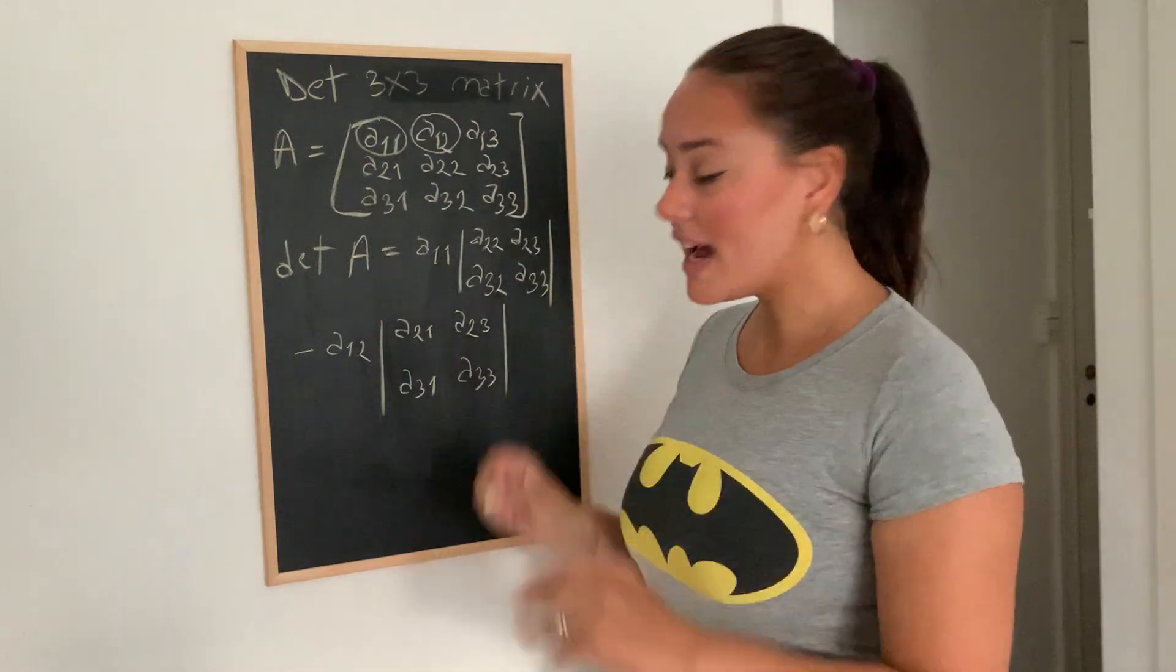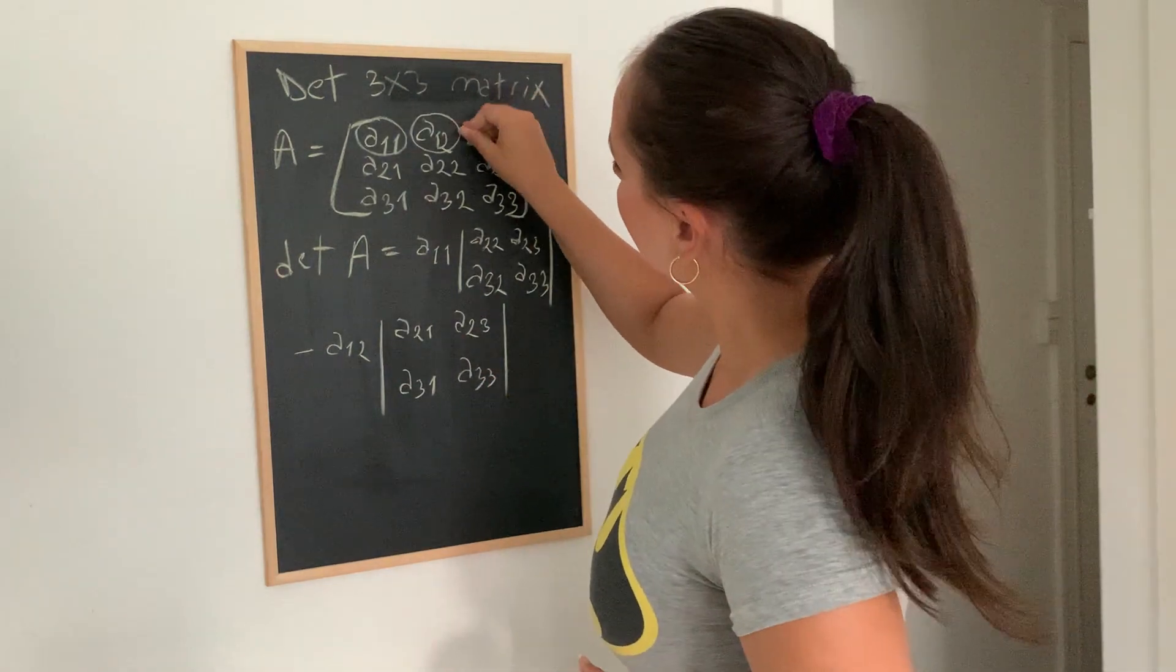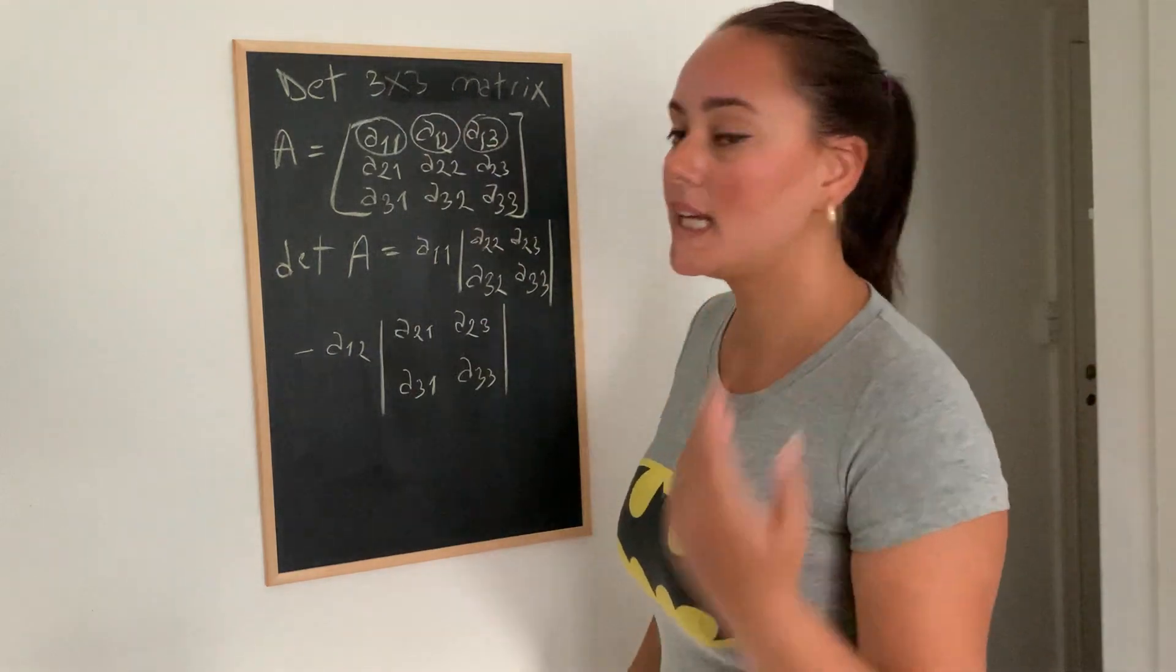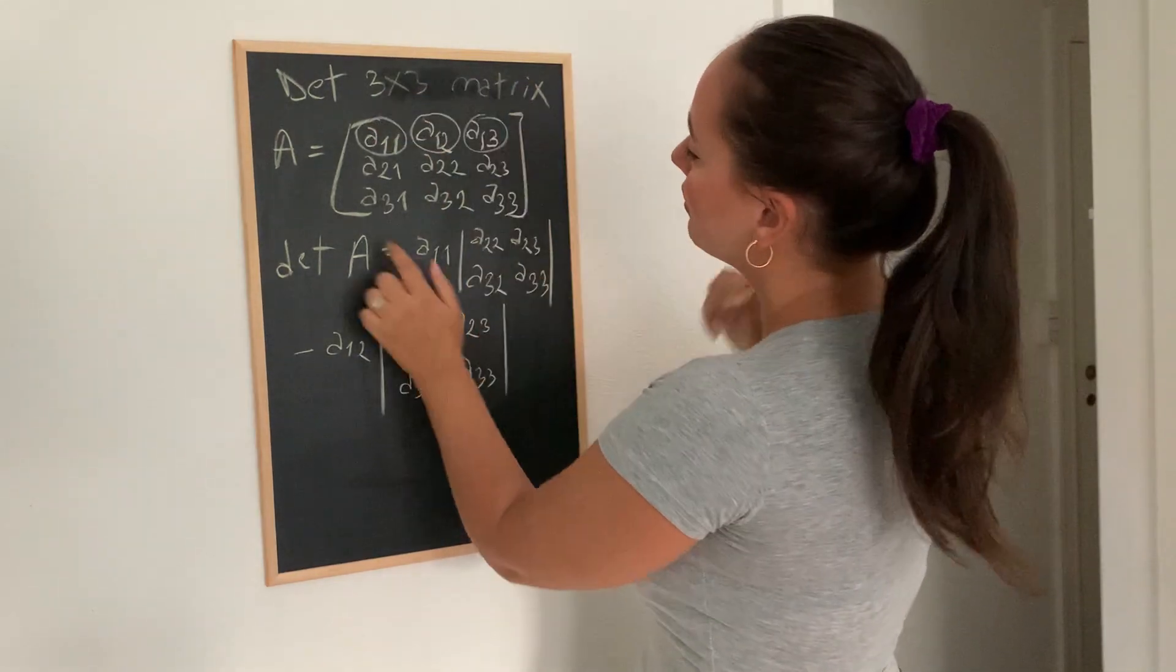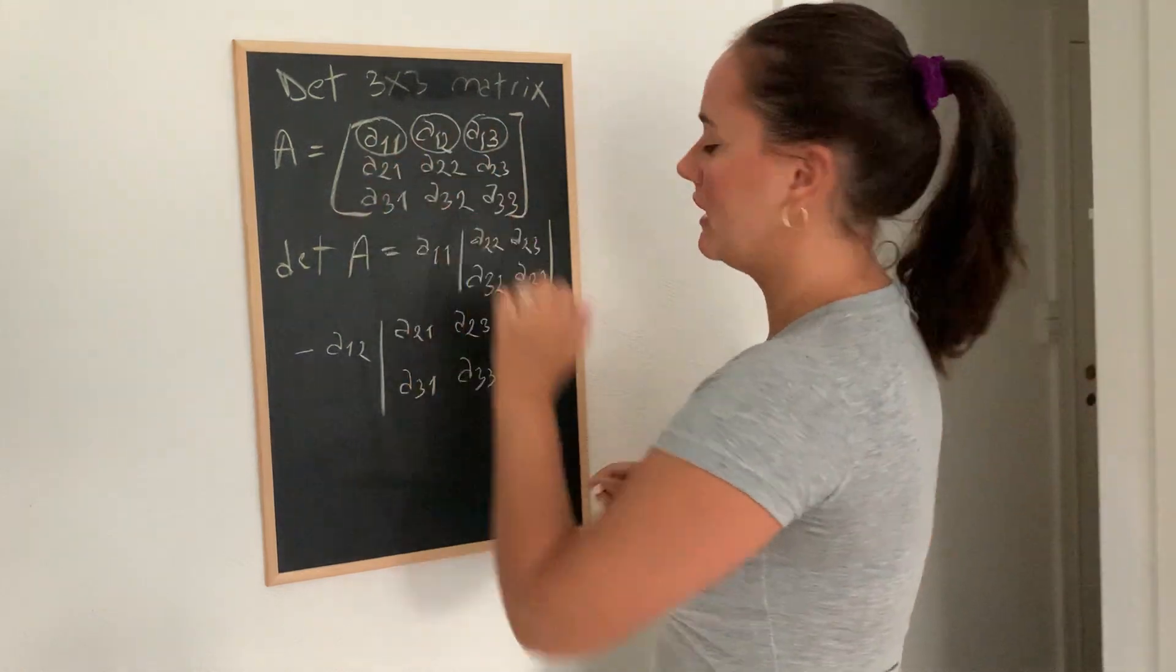And the last thing we're going to do is take the last element and again, we're going to cover this column and this row and we're going to multiply this element with the remaining matrix.